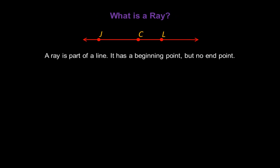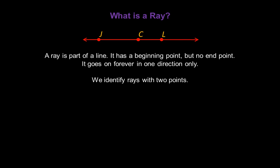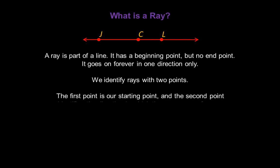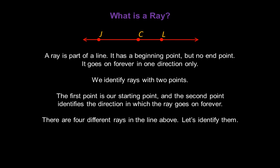What is a ray? A ray is part of a line. It has a beginning point but no end point. It goes on forever in one direction only. We identify rays with two points. The first point is our starting point, and the second point identifies the direction in which the ray goes on forever. There are four different rays in the line above.